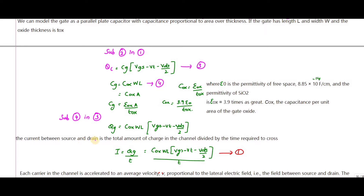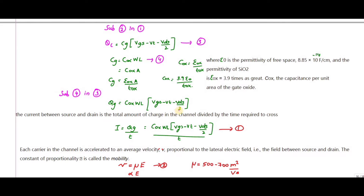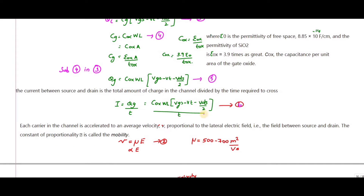The current between source and drain is the total charge in the channel divided by the time required to cross it: I = Q/t. Substituting the charge equation, we get the sixth equation: I = C_ox × W × L × (V_GC − V_T − V_DC/2) divided by t.